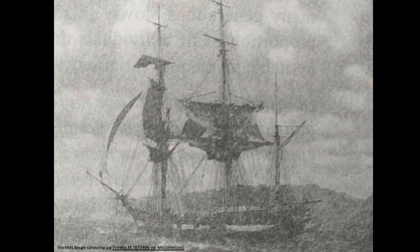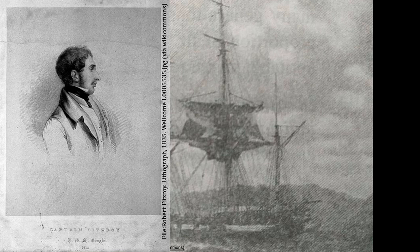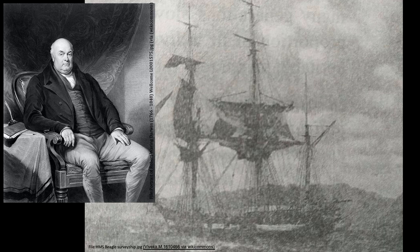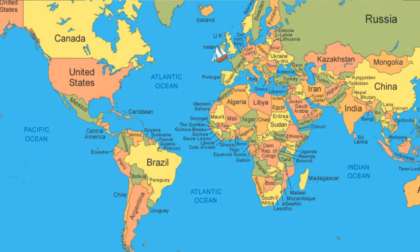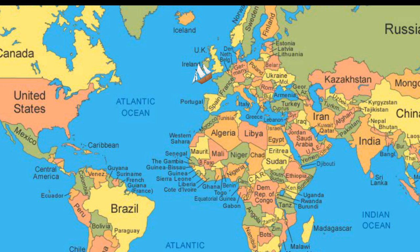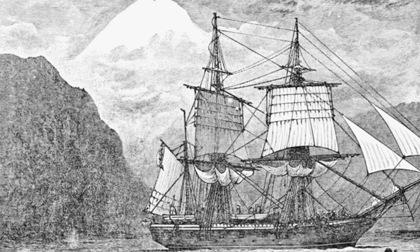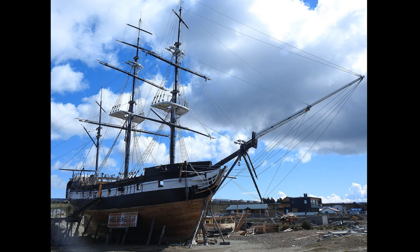Darwin returned home and found a letter recommending him from one of his professors for a self-funded naturalist position on the HMS Beagle, which was going to map the coast of South America under the direction of Captain Robert Fitzroy. At first Darwin's dad disagreed with the trip, but he was later convinced and ended up paying for Darwin's spot. The HMS Beagle set sail on December 27, 1831. Darwin spent a great deal of his time on shore studying the geology and biology of the areas they encountered, and although seasick for most of the trip, he managed to keep detailed notes along the way.